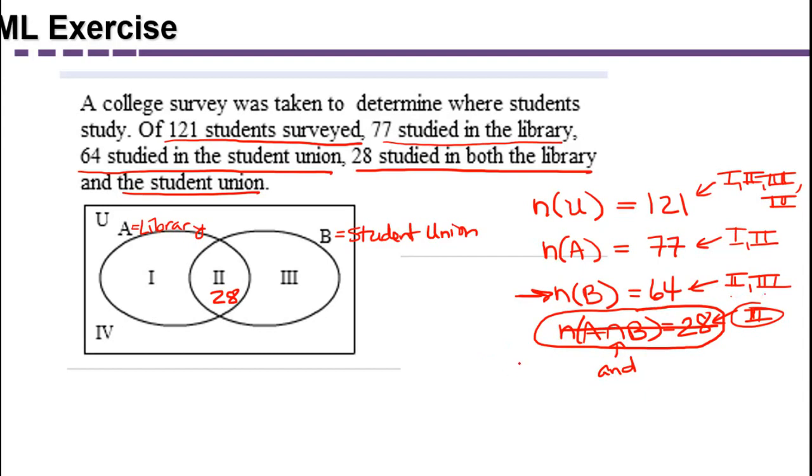because that describes regions 2 and 3. So if in 2 and 3 there are 64 total, then we can find region 3 by subtracting 64 minus the 28 we've already taken into consideration.